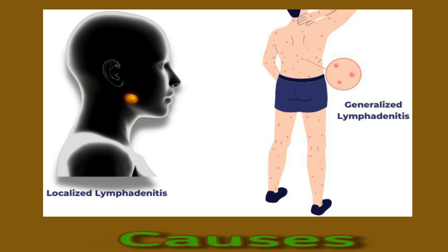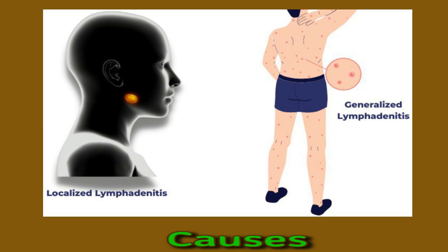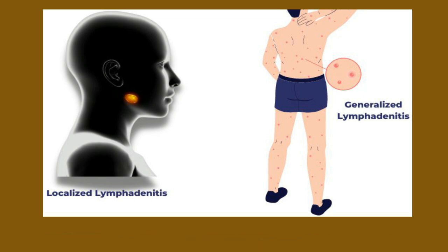Lymph nodes contain immune cells that help fight infection, and enlarged lymph nodes typically indicate infection. Lymphadenitis occurs when bacteria, viruses, or fungi reach the lymph nodes, causing infection, swelling, and intense pain. Less commonly, tuberculosis and cat scratch disease can lead to lymphadenitis. Sometimes a doctor may not be able to identify the infection that led to lymphadenitis.